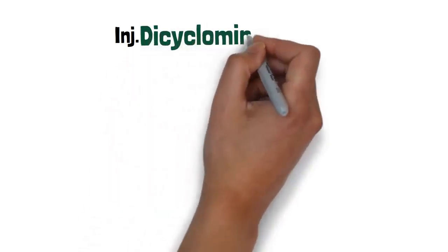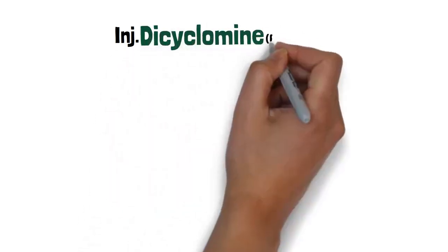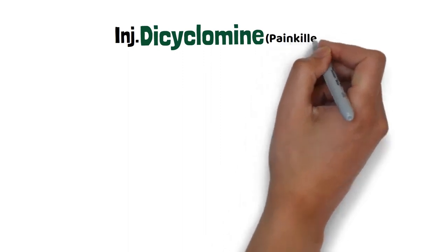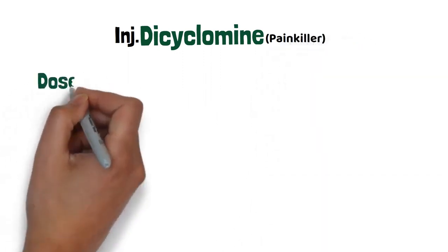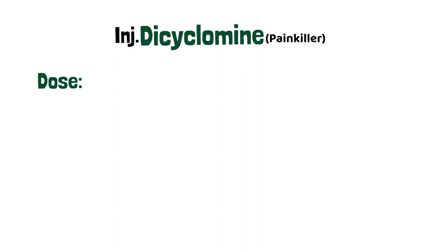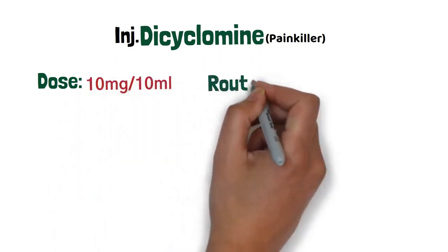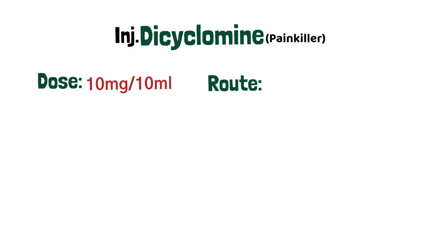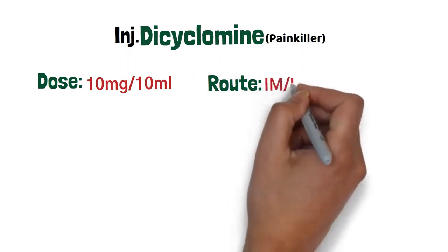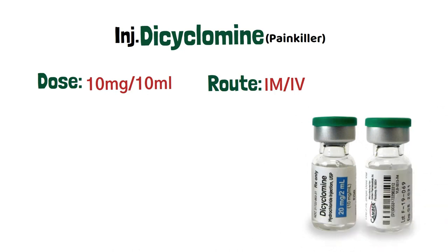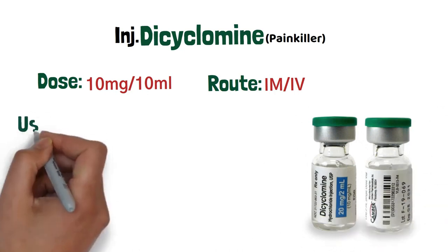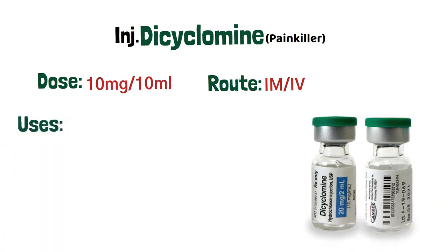Next injection is Dicyclomene — it's a painkiller. It's available in 10 mg and 10 ml. We can use it as IM and IV. We can see here some uses and side facts.